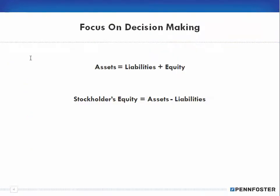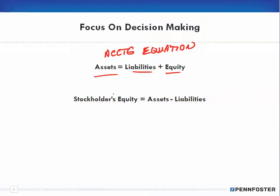Lastly, we're going to move on to the focus on decision making. As you recall, the accounting equation is: assets equals liabilities plus equity. In this section, the formula given for stockholders equity is: assets minus liabilities. All we did was rearrange the accounting equation — so this is nothing new.